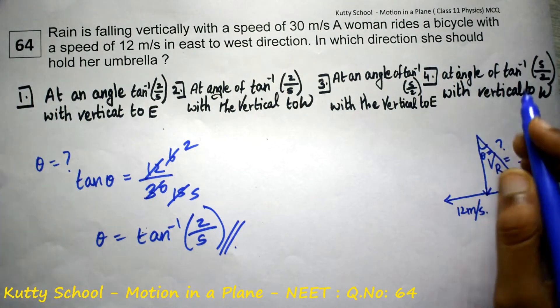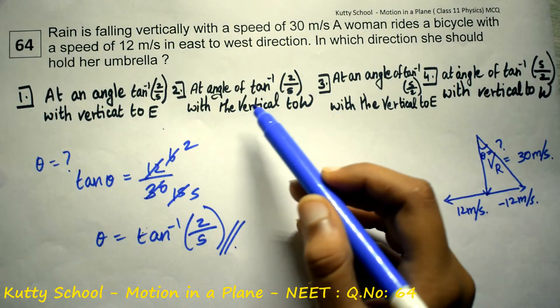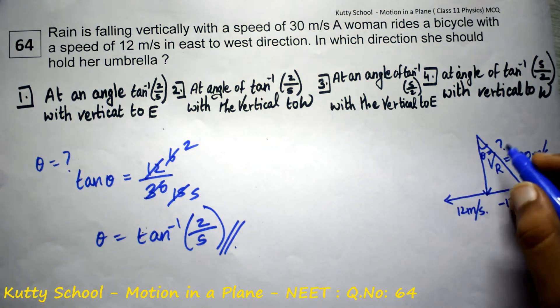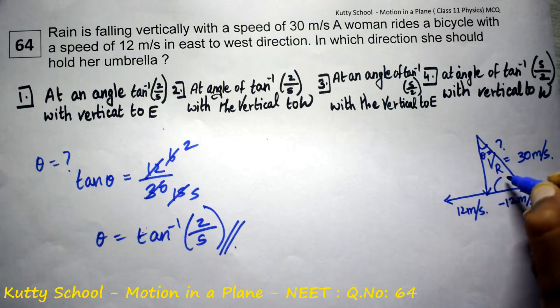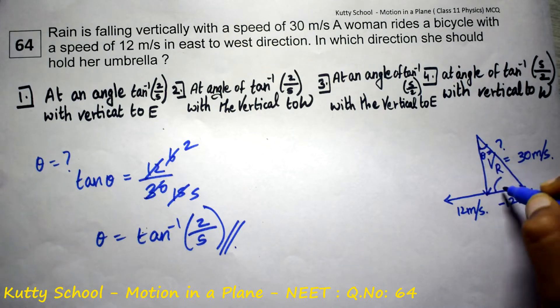So, at an angle of tan inverse of 2 by 5 with the vertical, toward the west. The west direction is the vertical reference here.